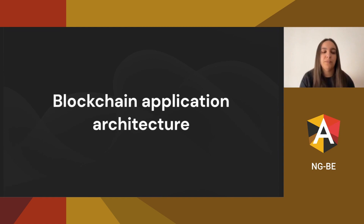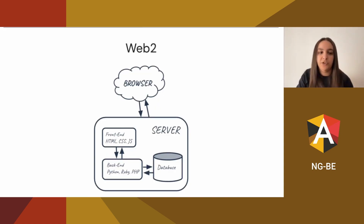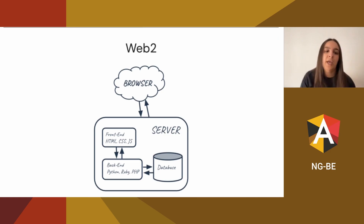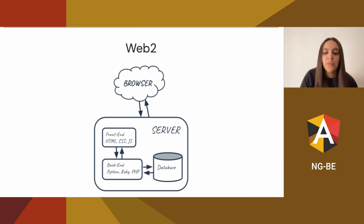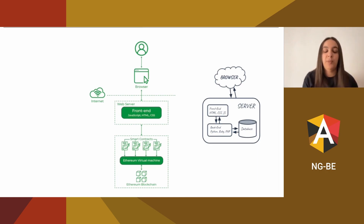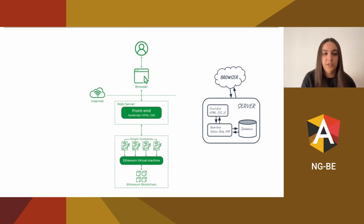Let's see the architecture of a blockchain application. In Web2, we had the browser communicating with our web server, and in the web server we can find the front end and the back end. The difference with a Web3 application is that in Web3, the browser only communicates with the web server that contains the front end. We don't have a back end anymore. All the information can be found in the blockchain. The front end communicates with the blockchain via the smart contract, and we can find all the information in there.